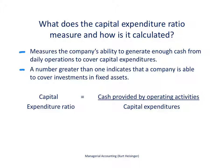Our next ratio is the capital expenditure ratio. It measures the company's ability to generate enough cash from daily operations to cover their capital expenditures. A number greater than one indicates the company can cover its investments solely from cash provided by operating activities. Companies can generate cash other ways and often finance the purchase of long-term assets, so this is just one measure to see if daily operations generate enough cash to cover capital expenditures.